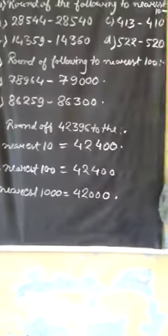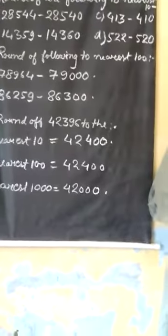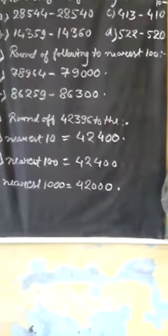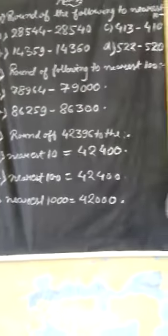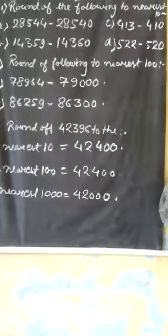Our question number D, 522. As usual, our ones place is less than 5, so we can write it only as 520.